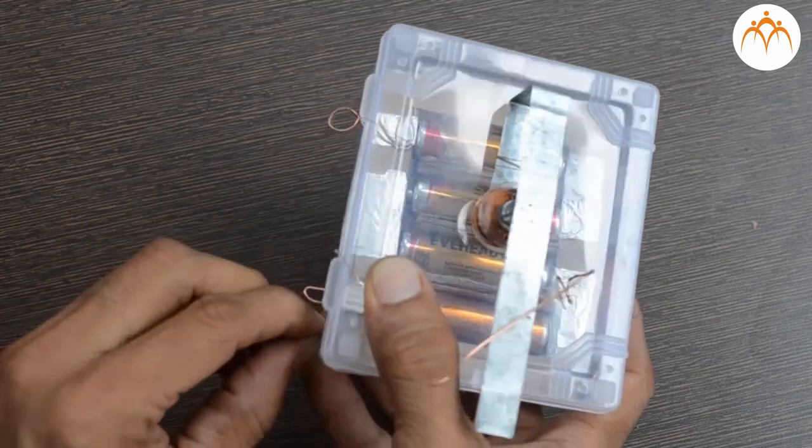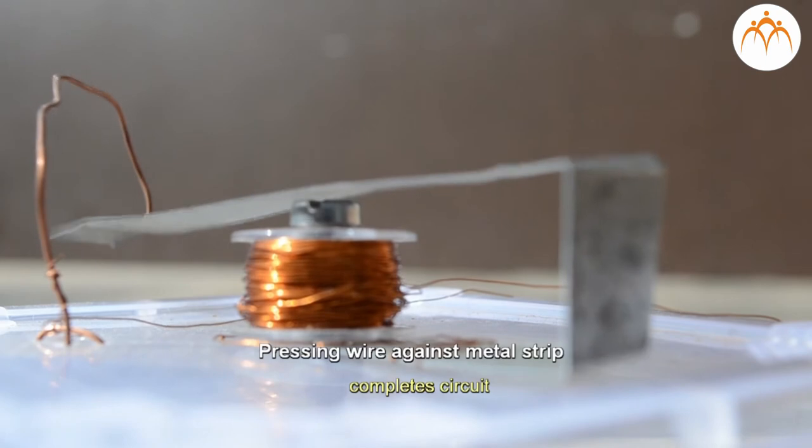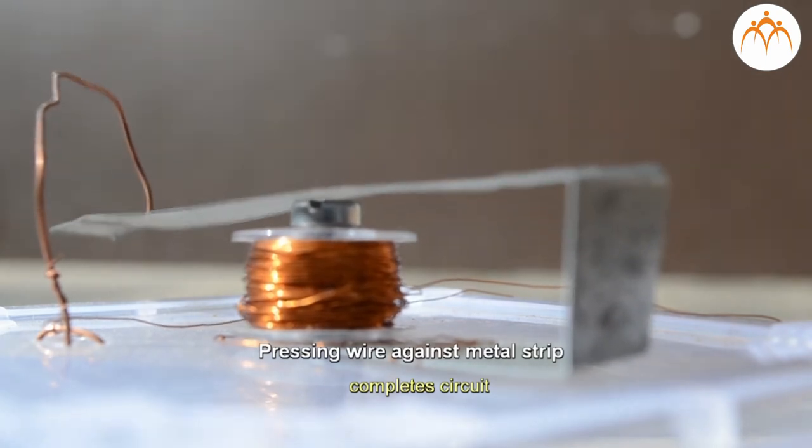When the copper wire is pressed against the steel strip, the circuit is completed and the screw becomes an electromagnet. It attracts the metal strip.